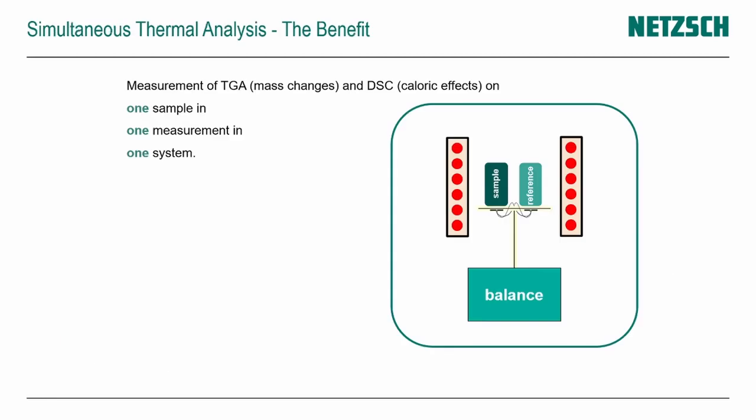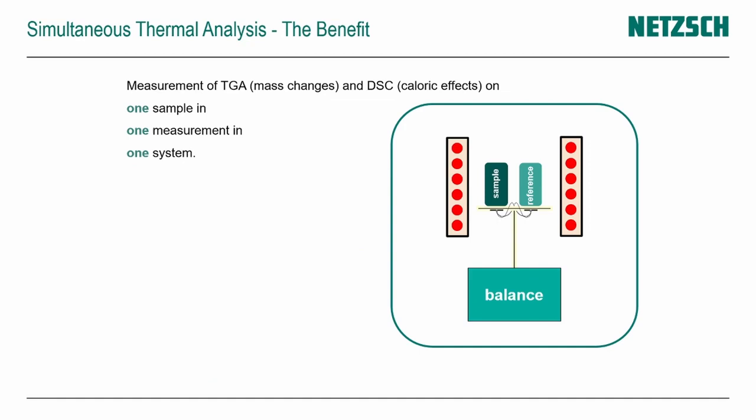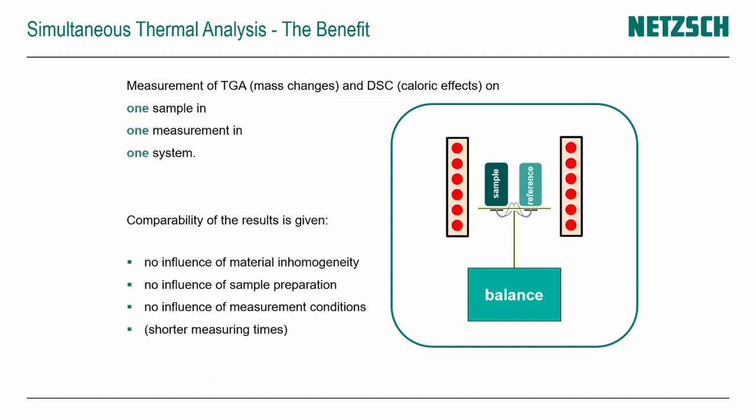The main benefit of the STA technique is that we do all the measurements — TGA and DSC — on one sample, in one measurement, on one system. Therefore, we have no problems with material inhomogeneity, sample preparation, or the influence of measurement conditions, because it is one sample in one measurement. It sounds quite good.